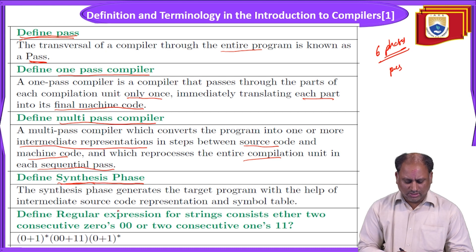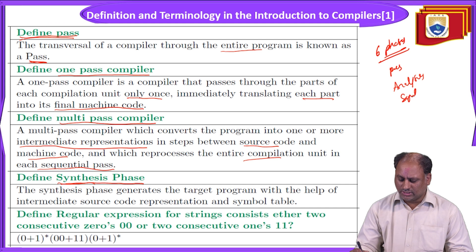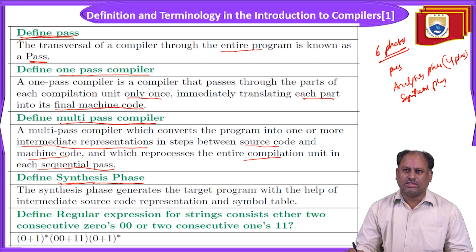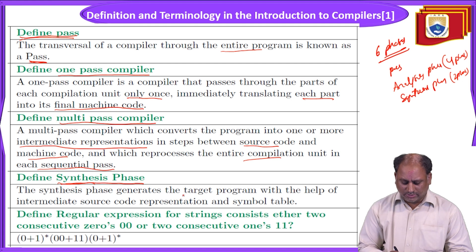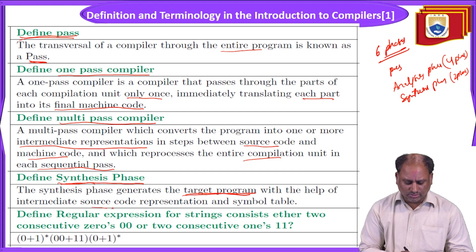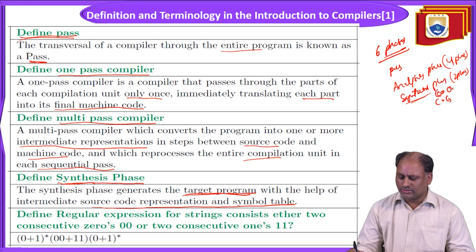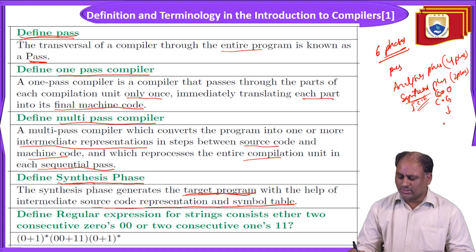The phases are divided into two groups: analysis phase and synthesis phase. The first four phases of the compilation are called the analysis phase, and the remaining two phases are called the synthesis phase. In the synthesis phase we generate a target program — that is a machine program — with the help of intermediate source code representation and the symbol table. The synthesis phase consists of code optimization and code generation. Its input is the intermediate code generation phase and its output is the target program.